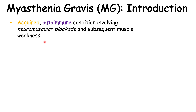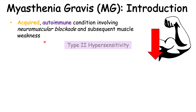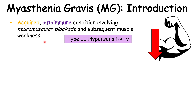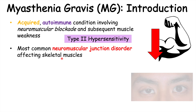We're going to talk about this in more detail when we discuss the pathophysiology. Myasthenia gravis is considered a type 2 hypersensitivity condition and it is the most common neuromuscular junction disorder affecting skeletal muscles.